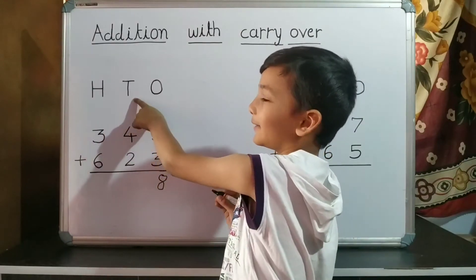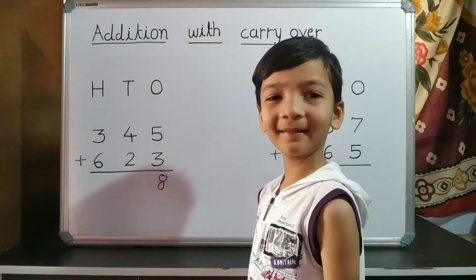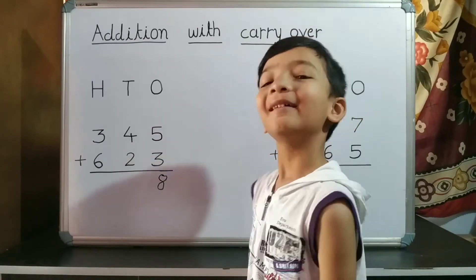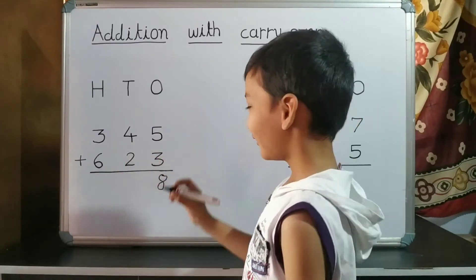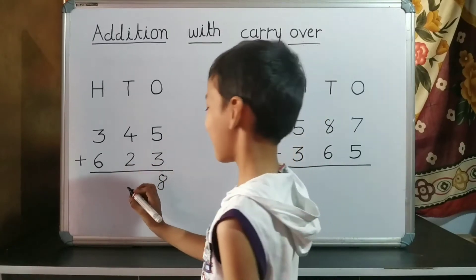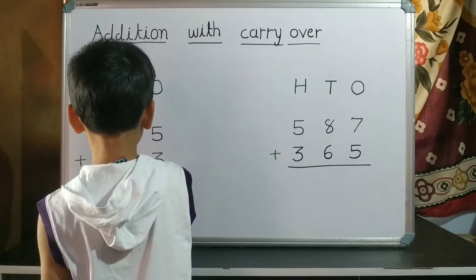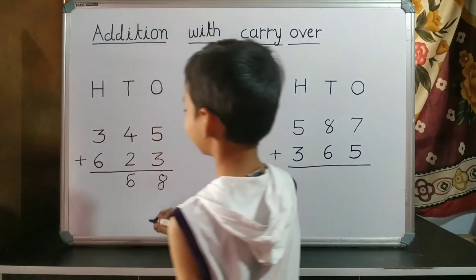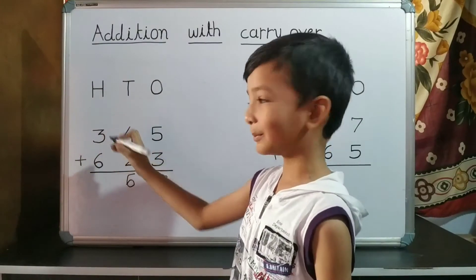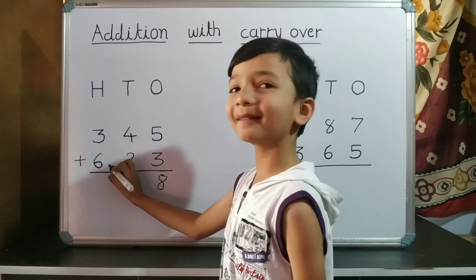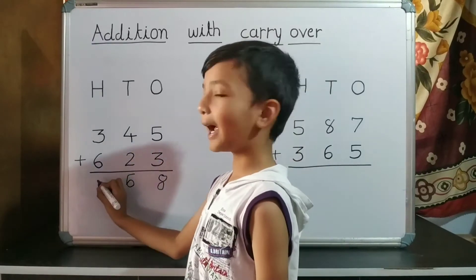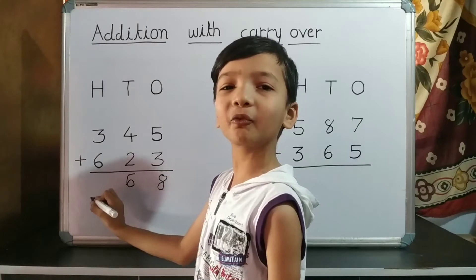Now we do addition of ten's place. 4 plus 2 is 6. So we write 6 on ten's place. Now we do addition of hundred's place. 3 plus 6 is 9. So we write 9 on hundred's place.